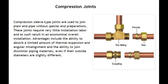Number 7: Compression Joints. Compression sleeve type joints are used to join plain end pipe without special end preparations. These joints require very little installation labor and as such result in an economical overall installation. Advantages include the ability to absorb a limited amount of thermal expansion and angular misalignment, and the ability to join dissimilar piping materials, even if their outside diameters are slightly different.